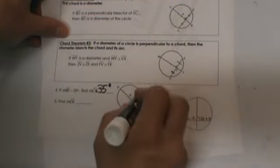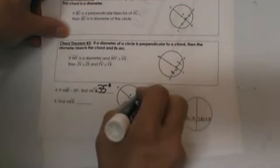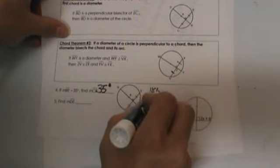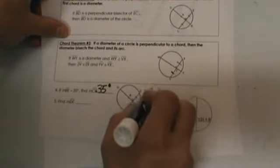We know BD is a diameter. How many degrees are in a semicircle? 180. So we're going to take 180 and we're going to subtract 35.